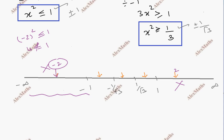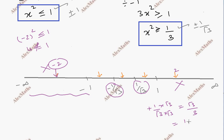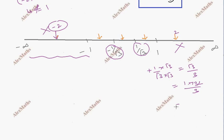If I have minus 1 plus 1 over root 3, the value of 1 by root 3 — rationalizing the denominator: root 3 over 3, which is approximately 1.732 divided by 3, roughly 0.577.